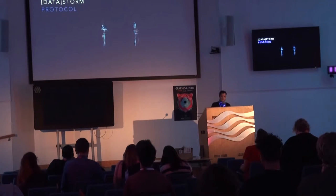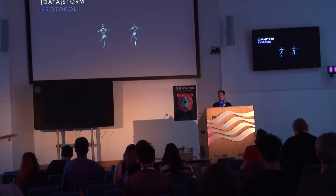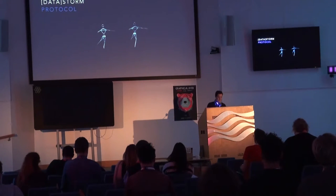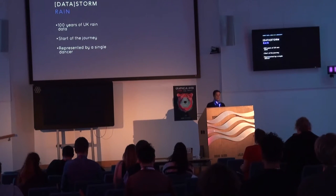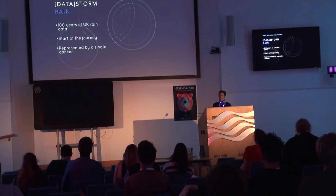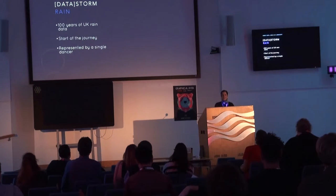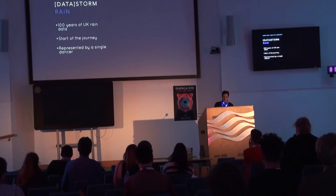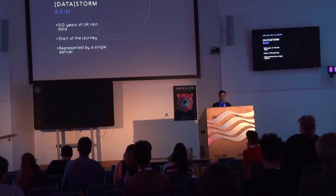One of the challenges for DataStorm was actually getting large data sets that produced clear, usable, and understandable bits of data. We looked at trace route data but it didn't really look good on screen unless you really modified it. For one piece we used a hundred years worth of rain data — the animation has each month representing a circle, the size of the circle representing the amount of rain, and the position based on where the dancer moved. We use a lot of weather data because there's loads of it and it's understandable across the world, whereas not all data sets are suitable for a cross-cultural approach.